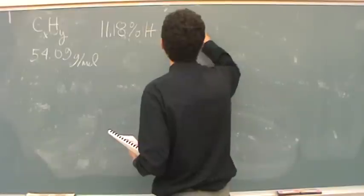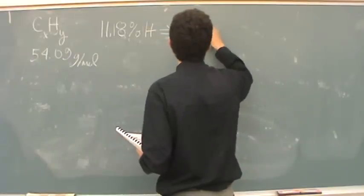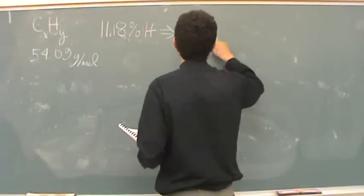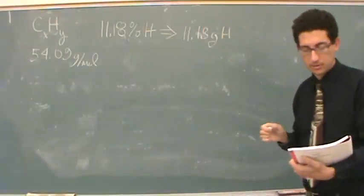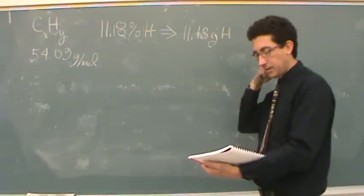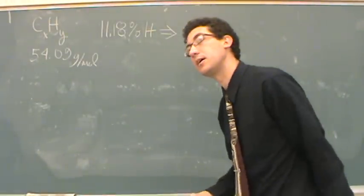And when we do that, what is common to do is just say, well, this is 11.18 grams of hydrogen. Then, let's say I wanted to find the grams of carbon.